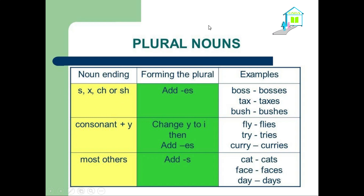Let's move on to where we have a noun which ends with a consonant plus Y — like, for example, 'fly.' Here L is a consonant plus Y. The plural form is 'flies.' Because we have omitted this Y and replaced it with I to have 'flies.' The same thing for 'try' and for 'carry.'